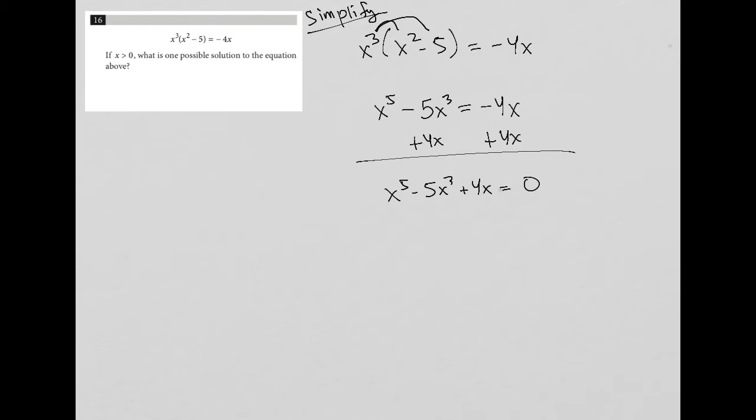I can then pull out an x because that's my GCF in this case. So I can factor this and say, x parentheses x to the fourth power minus 5x to the second power plus 4 equals 0. And then the question is, can I factor this any further?